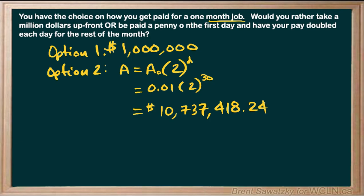So yeah, on the 30th day, we're getting paid around a little over 10 times what we would have been paid for the total month in the other option, option one. So yeah, clearly option two is the winner.